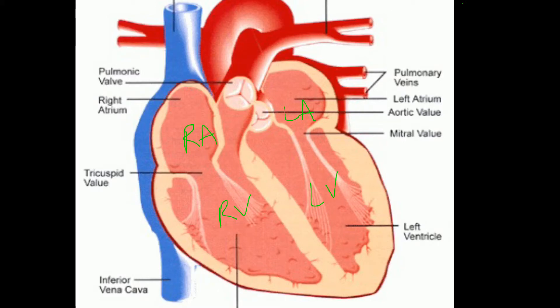The heart also has some valves. Between the atrium and the ventricle, there is a valve on each side. These valves between the atrium and the ventricle are known as atrioventricular valves, but they each have their own specific names. Between the right atrium and the right ventricle, we have the tricuspid valve. The valve between the left atrium and the left ventricle is known as the mitral valve, also commonly known as the bicuspid valve.